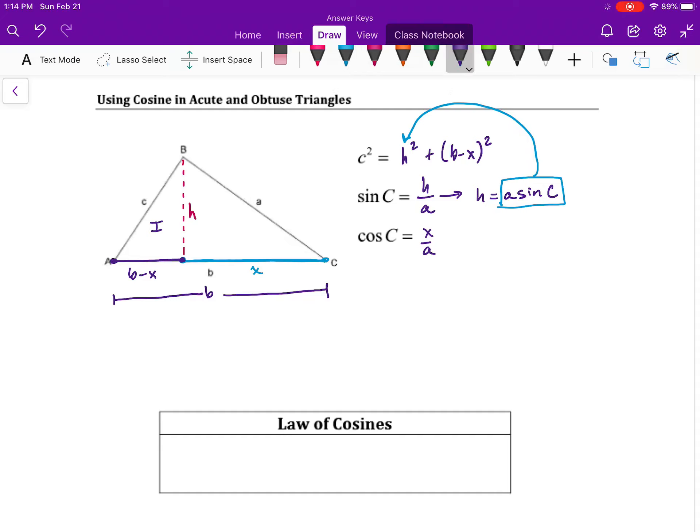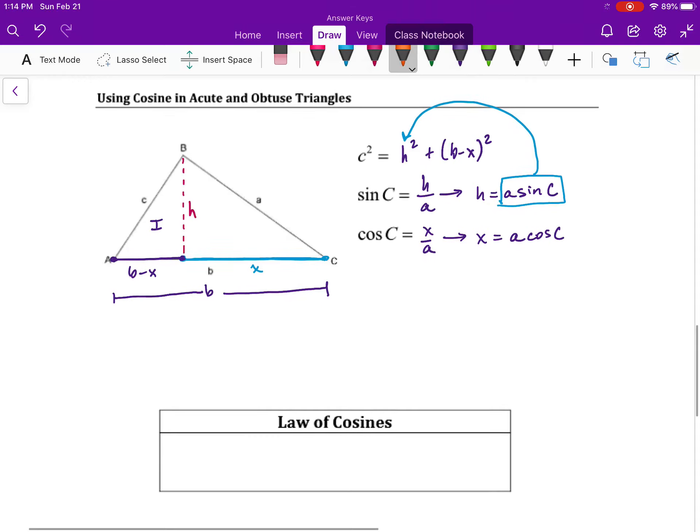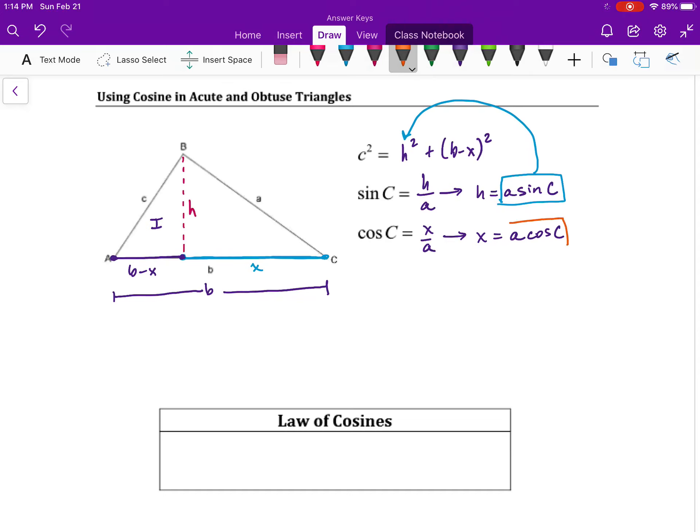Likewise, with cosine of C, we're going to isolate the X and call this X equals A cosine C. Again, allowing us to create a substitution for something back in the original Pythagorean theorem that lets us rewrite those terms back into things that are in terms of A, B, and C.